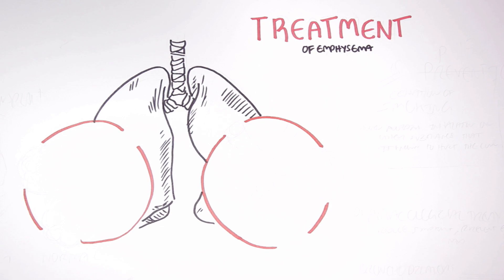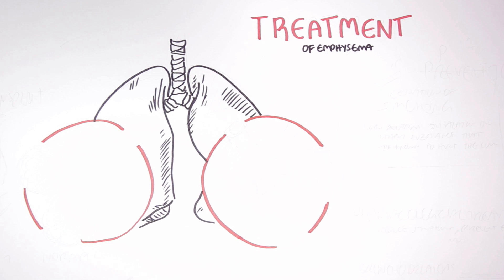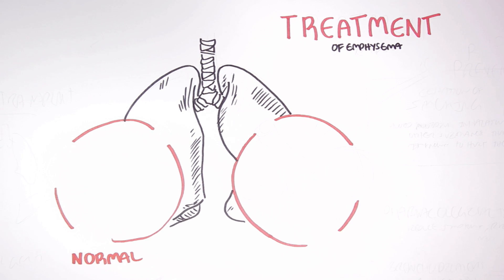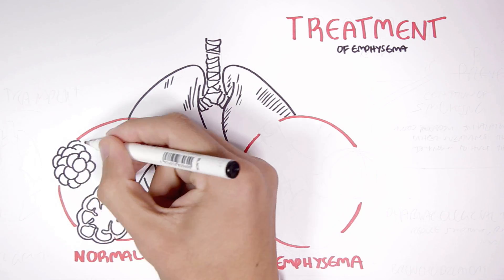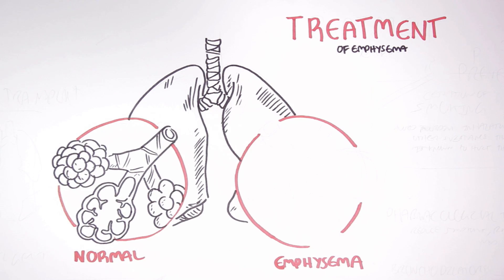In a person with emphysema, the alveoli are damaged. The alveoli walls and elastic fibers are damaged and lost. To look at it in a simple diagram, here are normal alveoli. They are not damaged and still contain the alveoli walls.